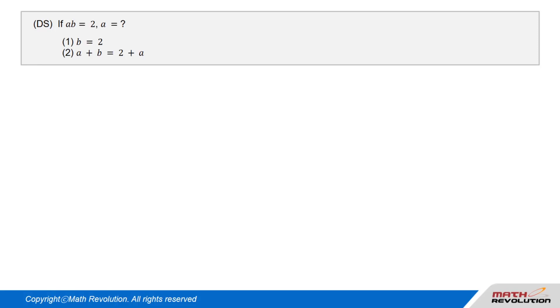Question 1. DS. If A times B equals 2, A equals what? Condition 1: B equals 2. Condition 2: A plus B equals 2 plus A.